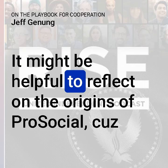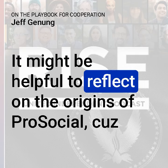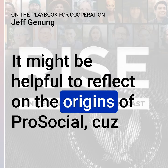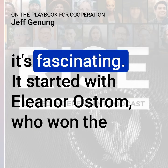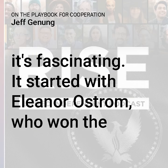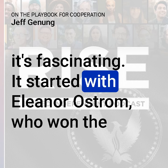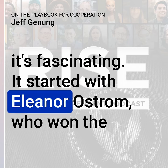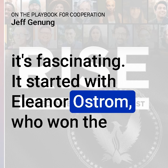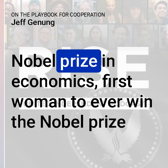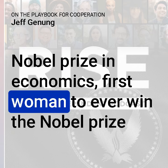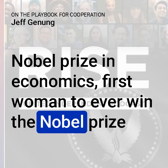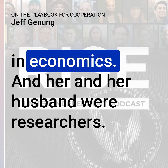It might be helpful to reflect on the origins of pro-social, because it's fascinating. It started with Eleanor Ostrom, who won the Nobel Prize in Economics — the first woman to ever win the Nobel Prize in Economics.